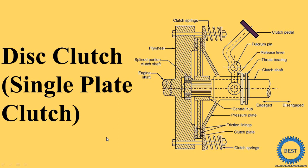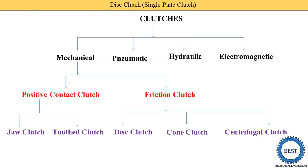In this video, I explain disc clutch. In a disc clutch, there are two types: one is single plate clutch and second is the multi plate clutch. In this video, I explain the single plate clutch. First we see the types of the clutch.